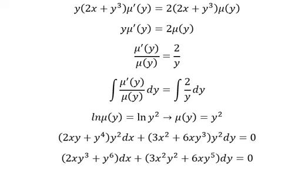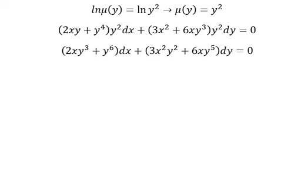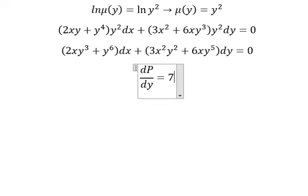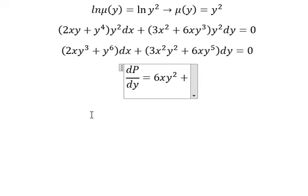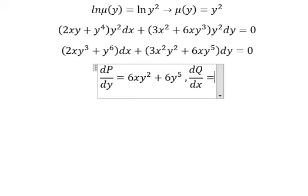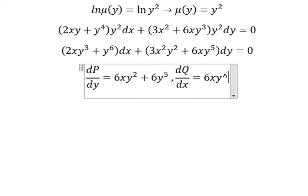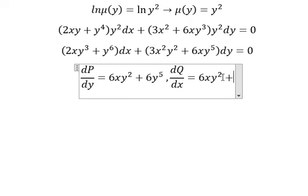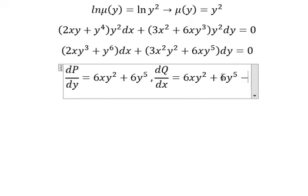Now for this one, we can put dp over dy. We got about 6x y to the power of 2, and this one we have 6x y to the power of 5. We got 6x y squared and 6x y to the power of 5. So we can see that this is about exact.